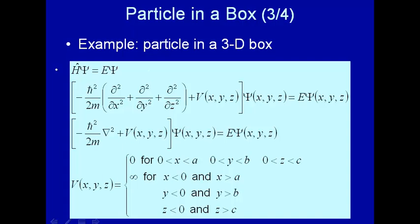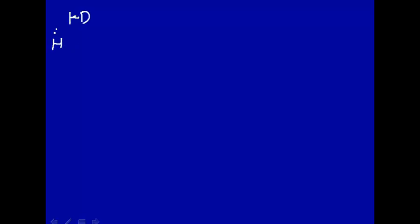Let's review what we did for the 1D case. In one dimension, the Hamiltonian was equal to minus h-bar squared over 2m, times the second derivative with respect to x. That was the Hamiltonian operator.